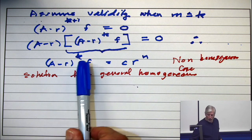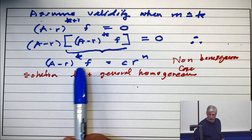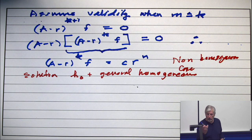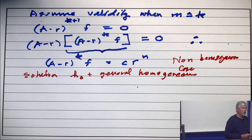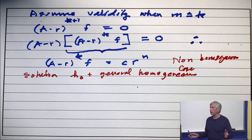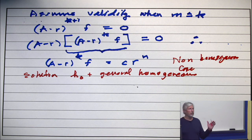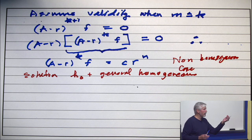So the one larger degree would now go 1, n, n squared, n cubed, up to n to the k. So there's a particular solution which is a polynomial which goes up to a degree n to the k times r to the n.